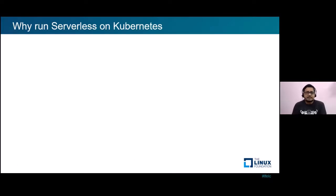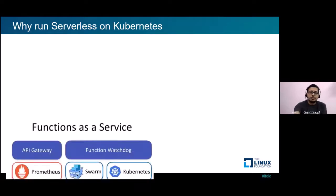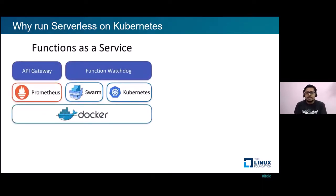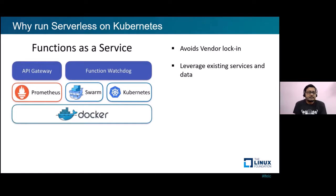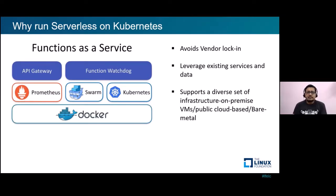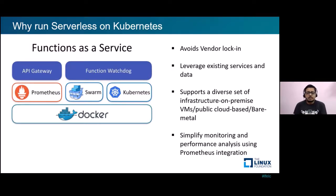So why should we consider running serverless on Kubernetes? Kubernetes has become the de facto standard for deployment, managing, and scaling centralized workloads. It avoids vendor lock-in and provides a single platform to run both containerized deployments as well as serverless-based deployments, allowing you to leverage existing services and data. It can support a diverse set of infrastructure, whether running on bare metal servers or on public cloud providers such as AWS, Microsoft Azure, or Google Cloud Platform. It also simplifies performance analysis and monitoring through integration of tools such as Prometheus within the platform stack.